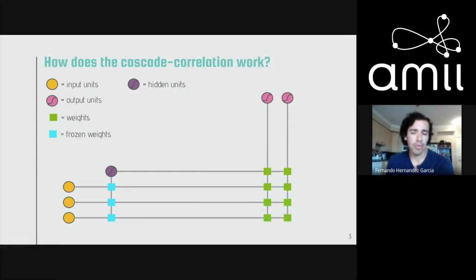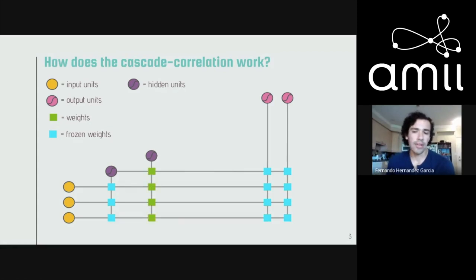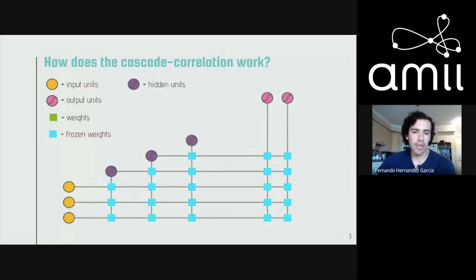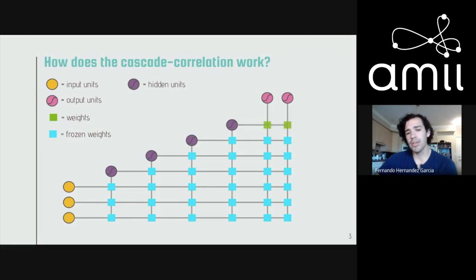We continue maximizing this correlation with gradient descent, and when learning plateaus we freeze these weights and connect the hidden unit to the output layer. We then unfreeze all output weights and retrain the output layer. When learning plateaus again, we add another hidden unit — now connected to the previous hidden unit as well. This process continues until some stopping criterion is met. It's also possible to train a pool of candidate units and select the best one.